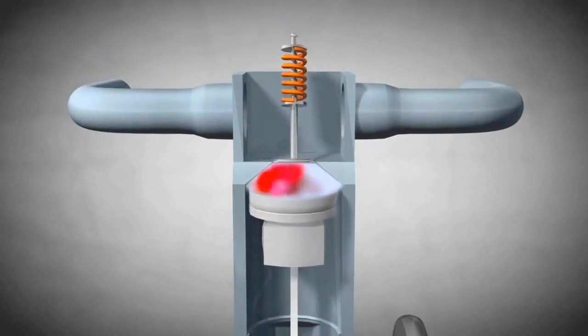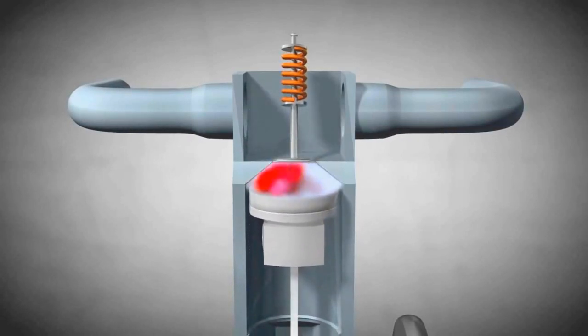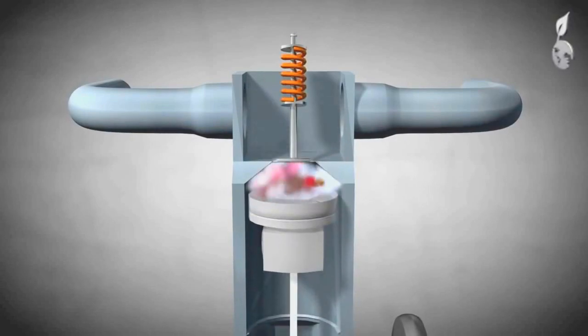At times of high RPM, for example on the highway, the atmospheric pressure will not push enough air into the cylinder. Consequently, the engine cannot run efficiently. Here, the turbocharger comes into play.